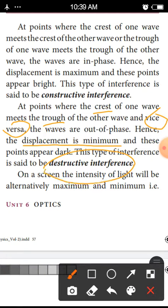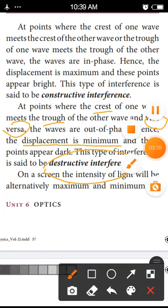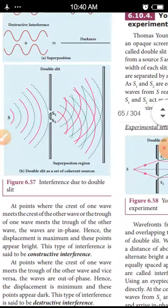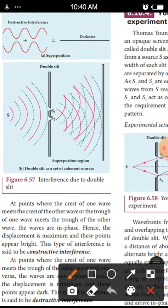On the screen, the intensity of light will be alternatively maximum and minimum. When we look at the screen, the intensity of light will be bright, dark, bright.